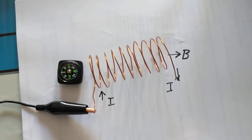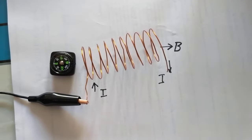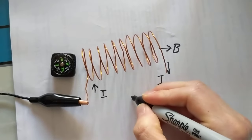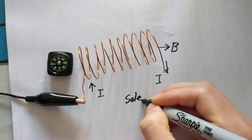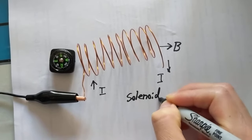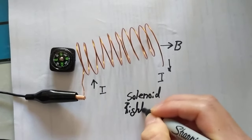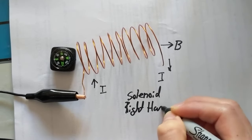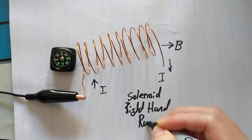But there should be an easier way to do it, and we actually do have that. This brings us to the solenoid right-hand rule.